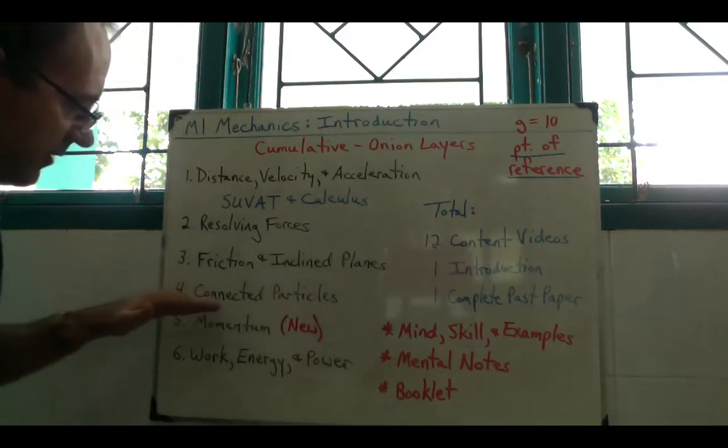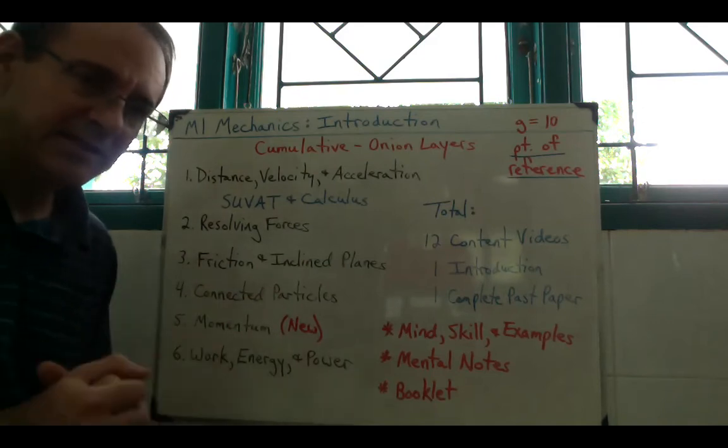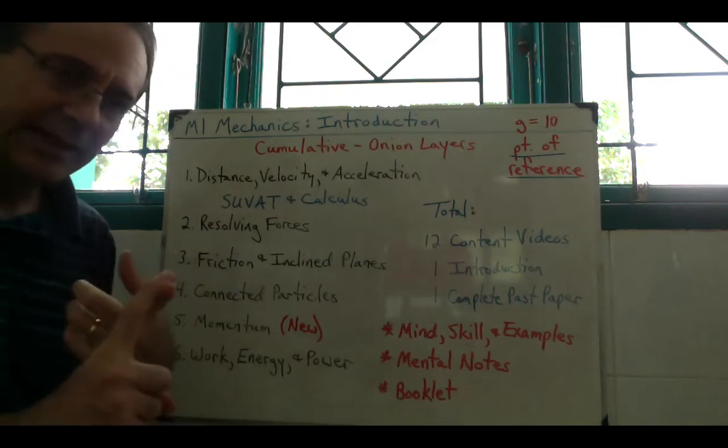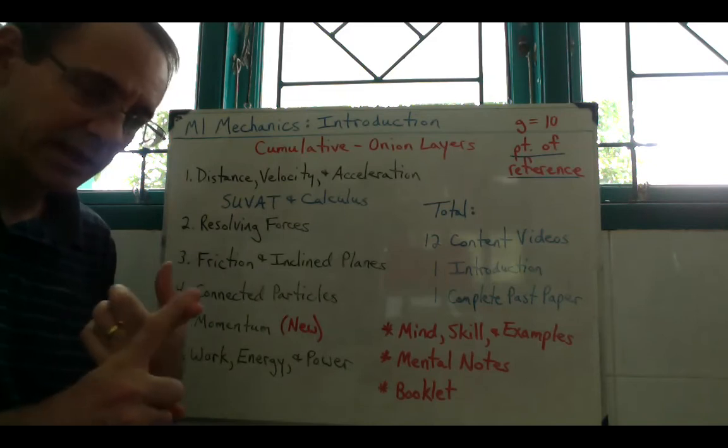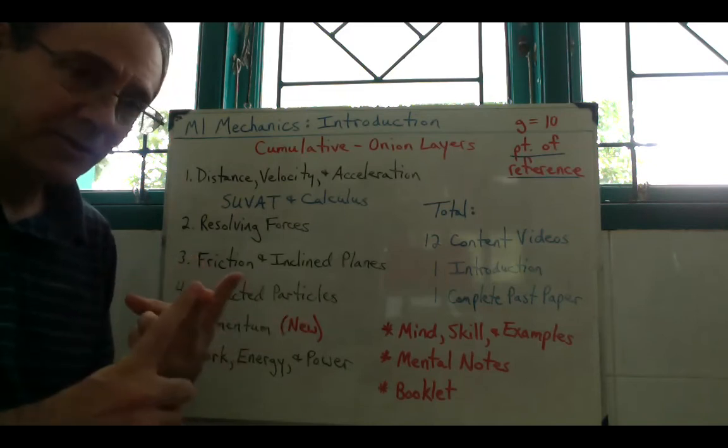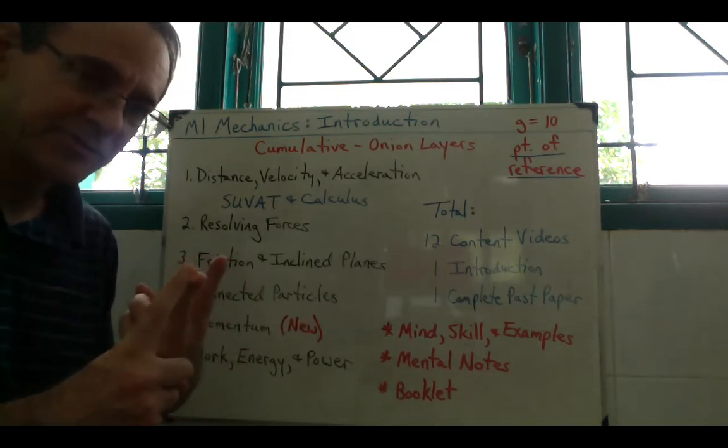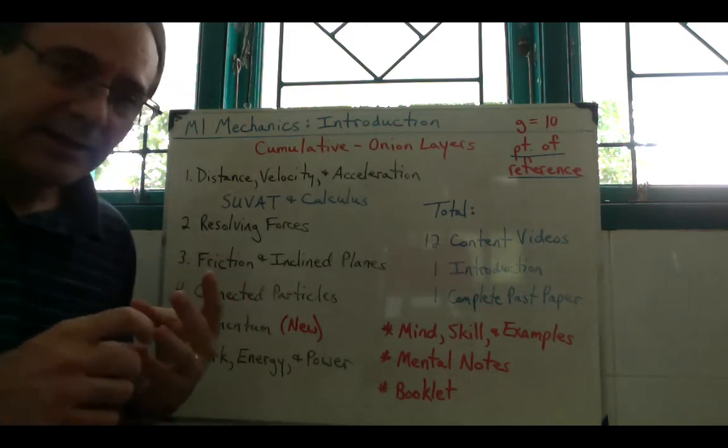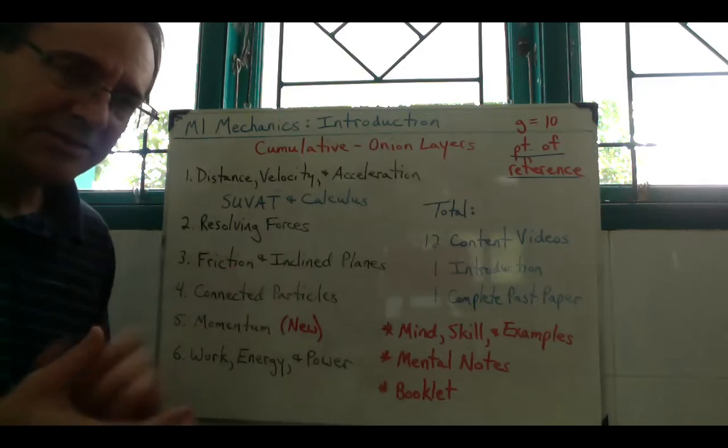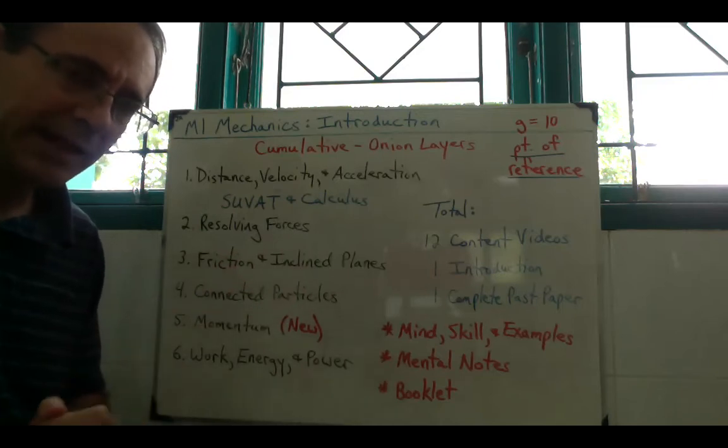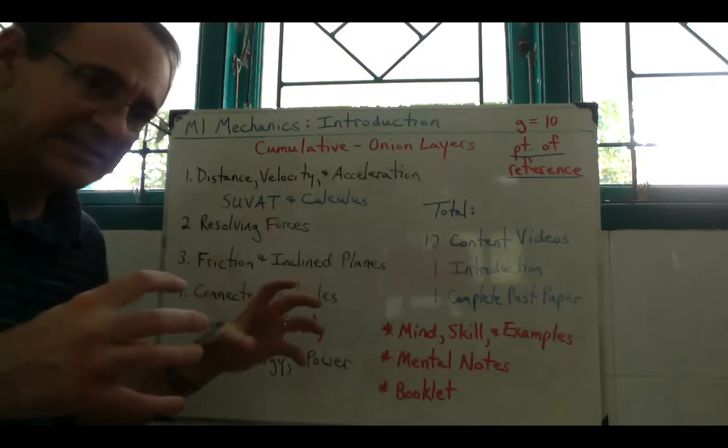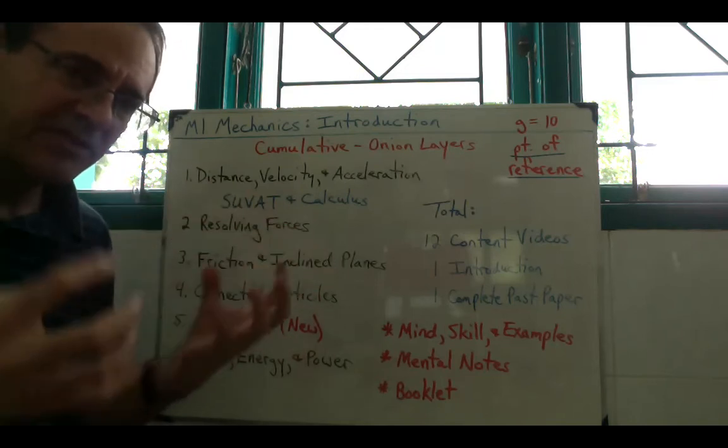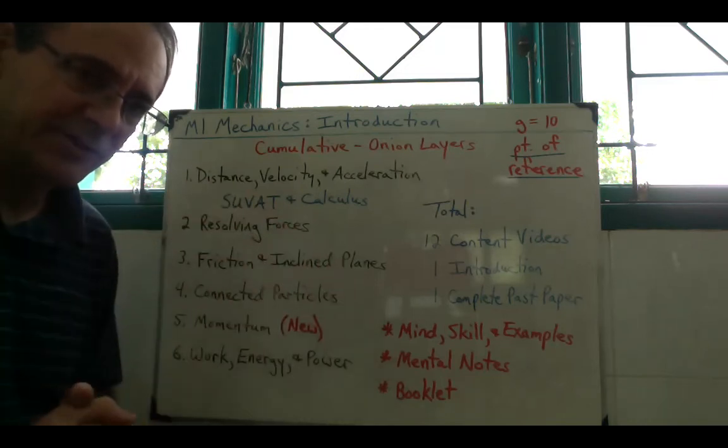Then the fourth unit is connected particles. This would include tensions on string pulleys, also a car connected to a trailer. It includes basically anything that's connected in either way and can either move as a system or can be separated into the individual components.